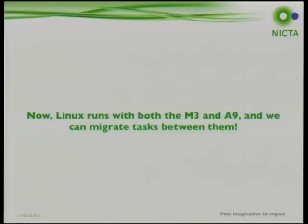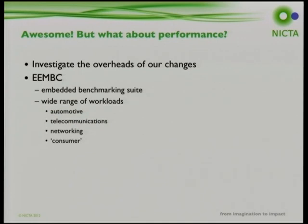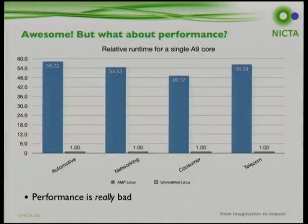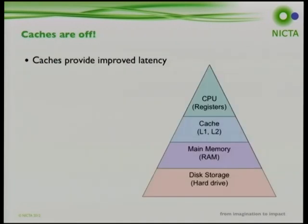With Linux running on both M3 and A9 with migration support, we benchmarked using the EEMBC embedded benchmark suite, which has workloads separated into automotive, telecommunication, networking, and consumer suites. Comparing runtime on a single A9 in our unmodified versus modified system, performance was roughly 50 times worse. This was because we had caches disabled.